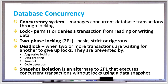Strict two-phase locking is when a transaction must hold all its exclusive locks until it commits or aborts, and most relational database concurrency systems implement this type. There's also rigorous two-phase locking, where a transaction holds both shared and exclusive locks until the transaction commits or rolls back. This type is easier to implement than strict but not as efficient because shared locks are held longer.